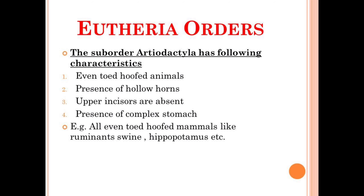Moving to the next, the characteristics of the Artiodactyla: they have even-toed hoofs, presence of hollow horns, upper incisors absent, and presence of complex stomachs. For example, you can note down all ruminants like swine, cattle, buffalo, hippopotamus, etc. I compiled it in very simple language which is just very easy to learn.